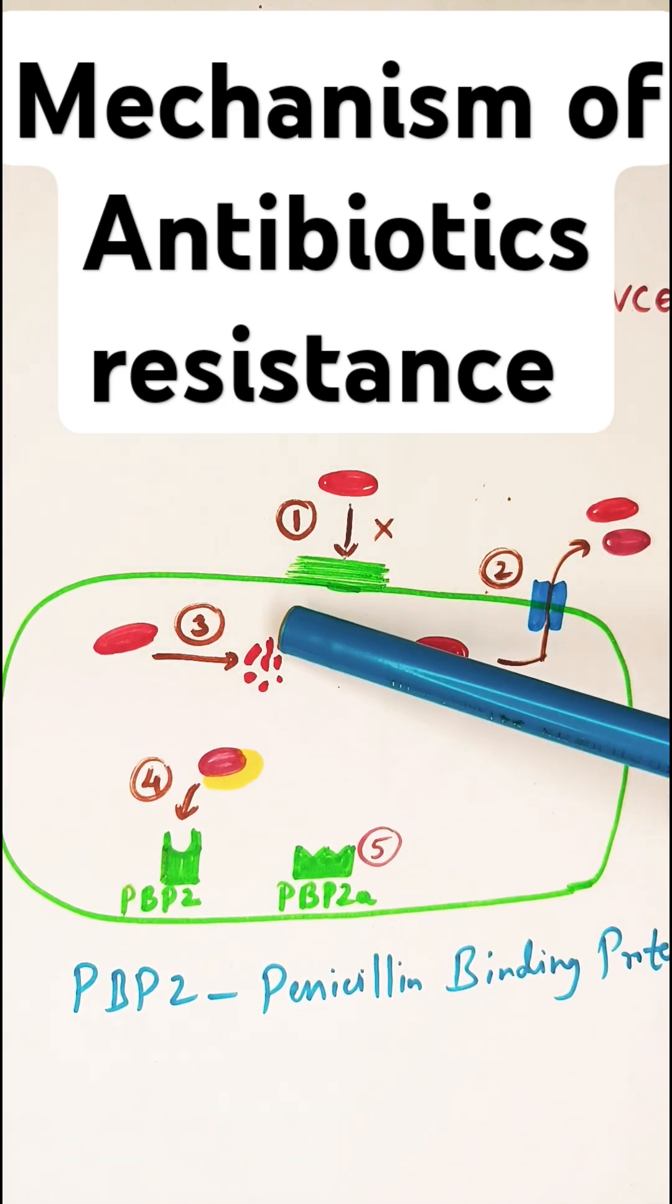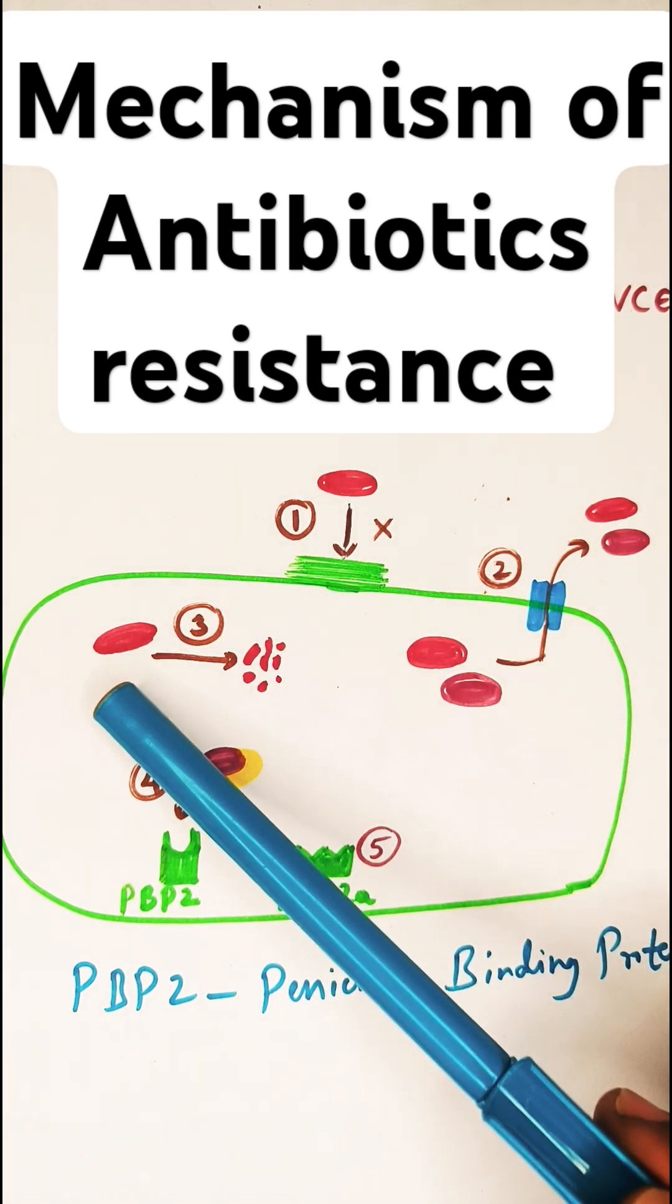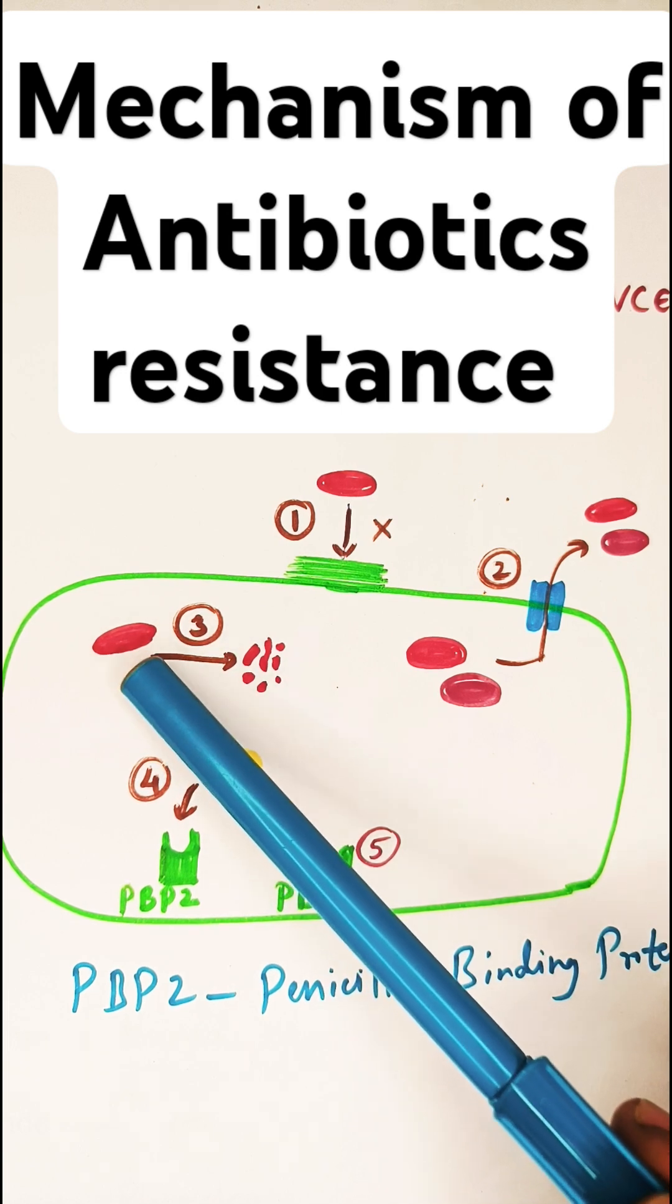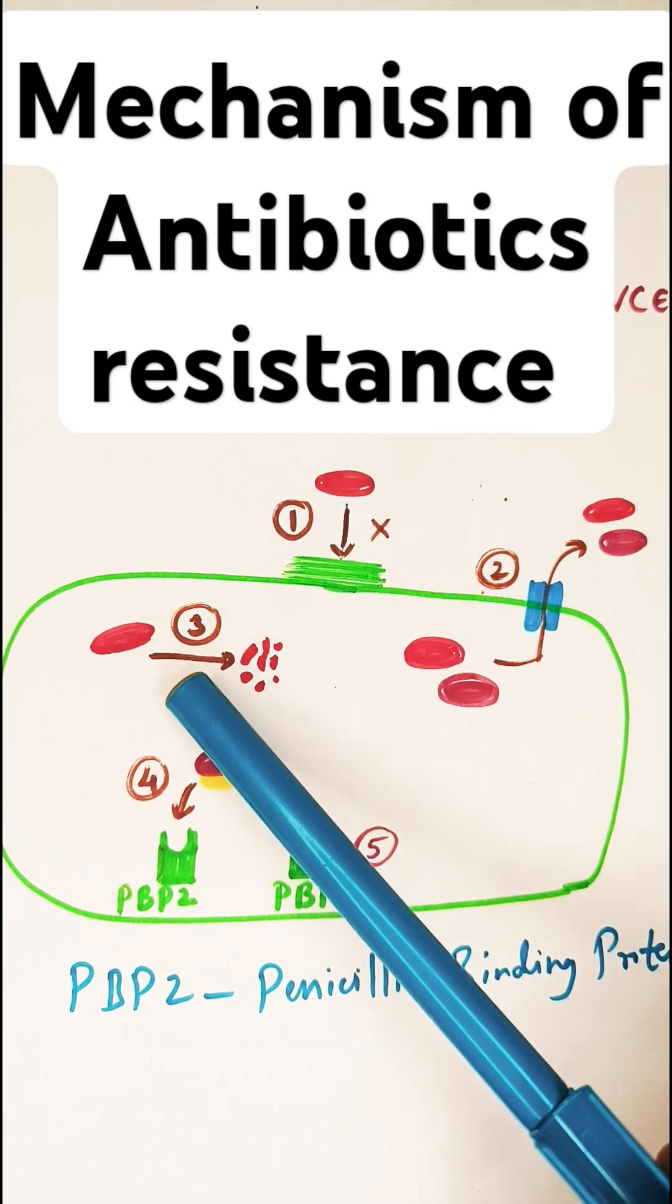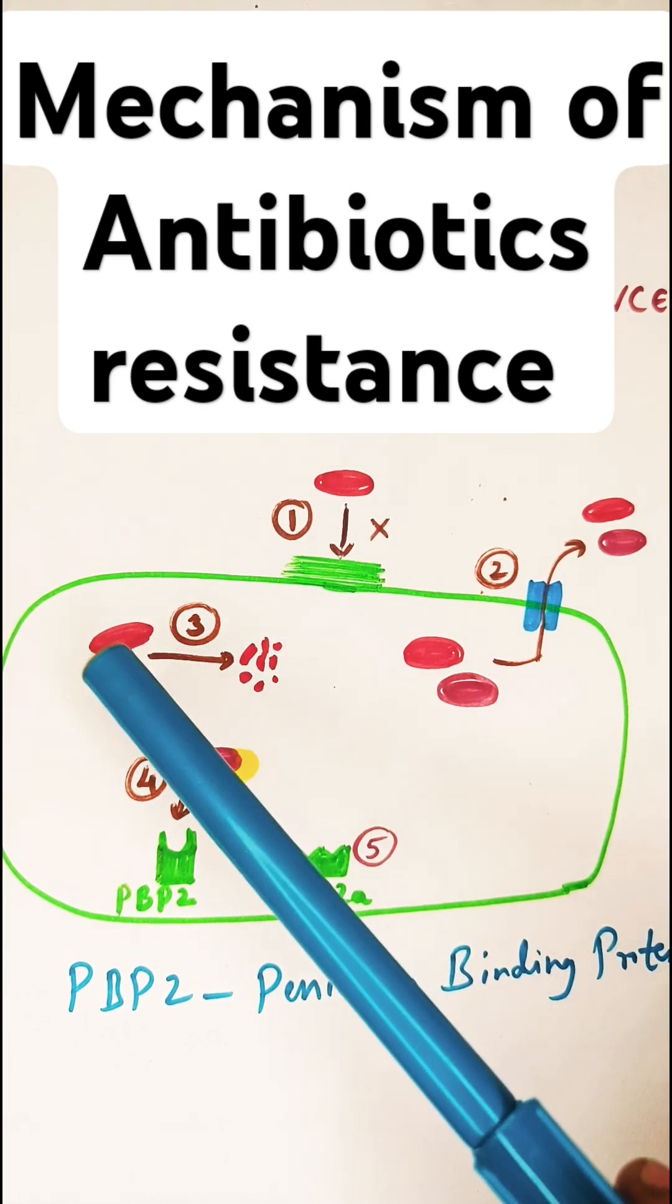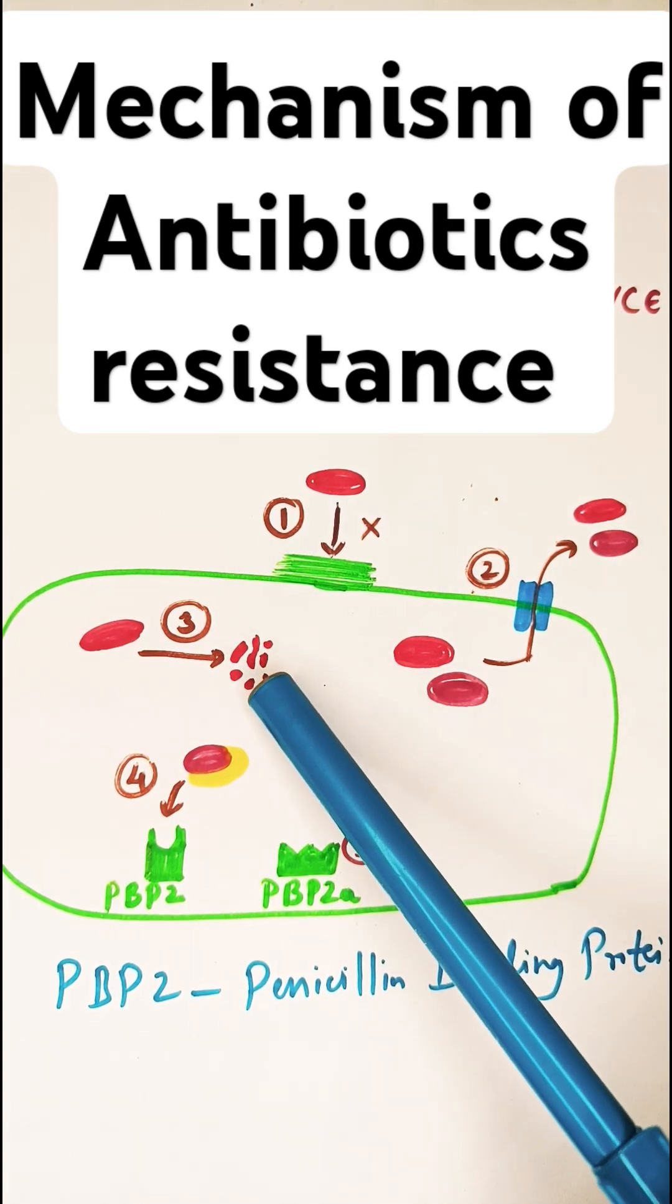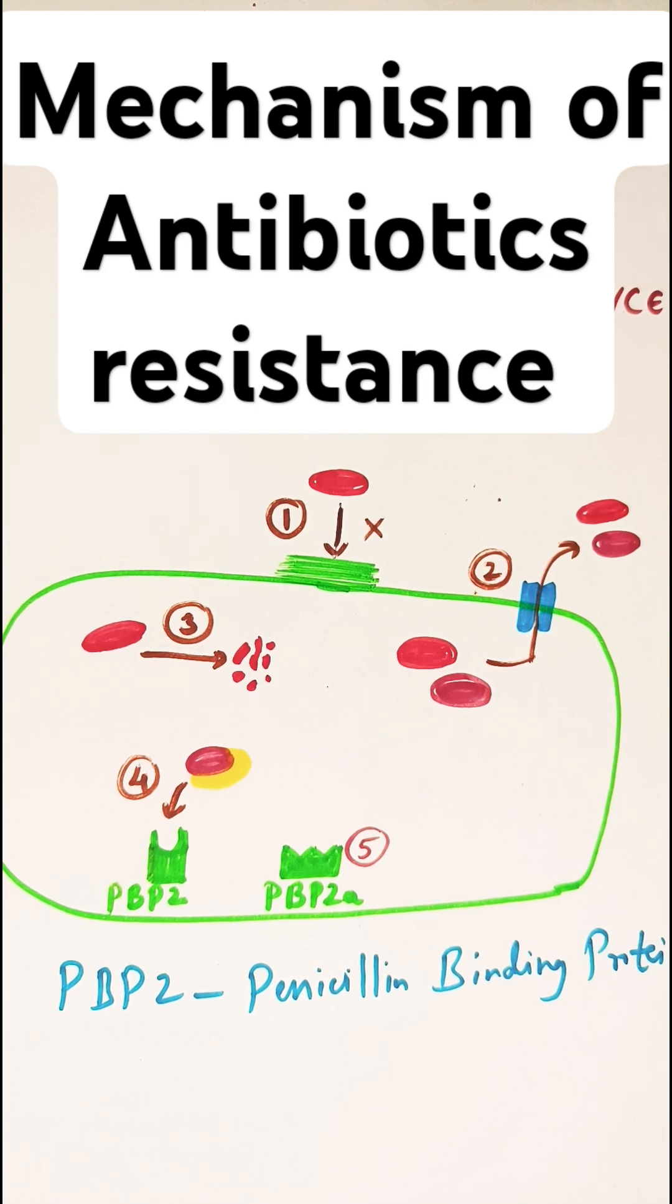The third mechanism is enzymatic degradation or modification. This red one, just imagine this is a penicillin drug. Penicillin has a basic structure of a beta-lactam ring. Now bacteria has started producing beta-lactamase which will break down the beta-lactam ring of penicillin, so the penicillin becomes ineffective. Similarly, aminoglycoside modifying enzymes can sometimes be produced by the bacteria which will break down aminoglycosides.